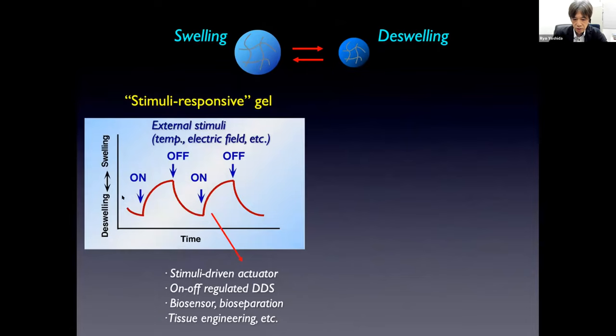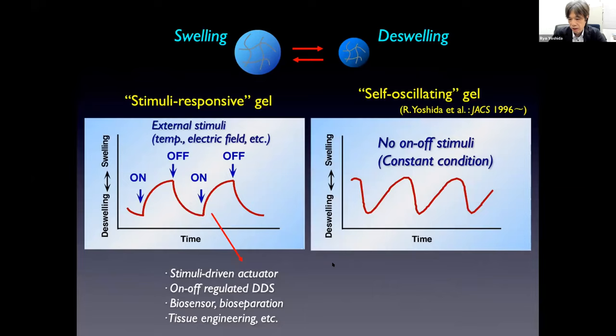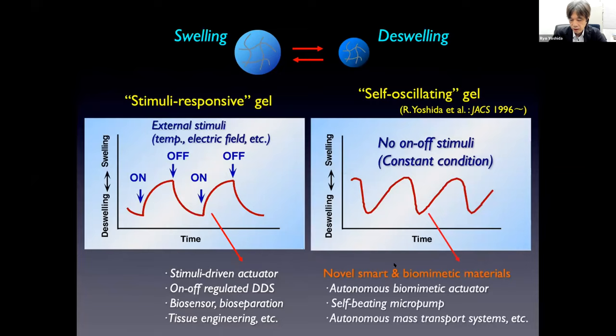In stimuli-responsive gels, to cause the swelling and deswelling changes, we need the switching of external stimuli, such as temperature or electric field, and so on. On the other hand, we developed a new type of functional gels called self-oscillating gels that show autonomous swelling and deswelling changes under constant conditions, without any switching of stimuli. Such materials are expected to be novel smart and biomimetic materials, such as autonomous biomimetic actuators like self-beating micropumps.